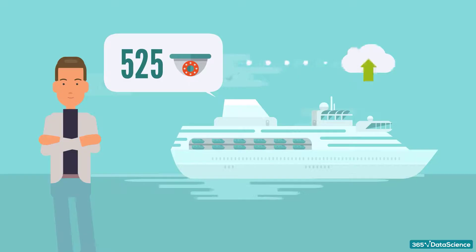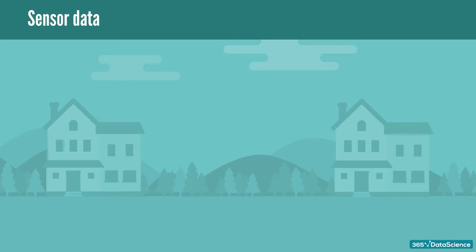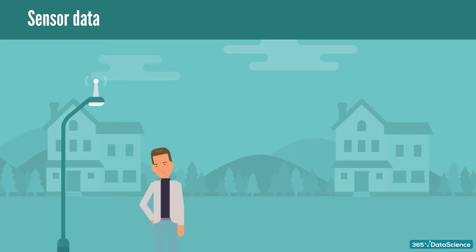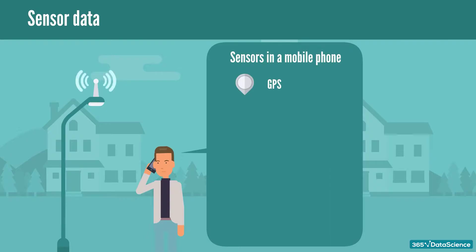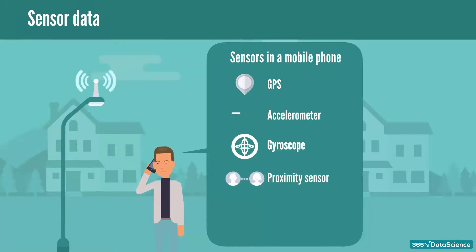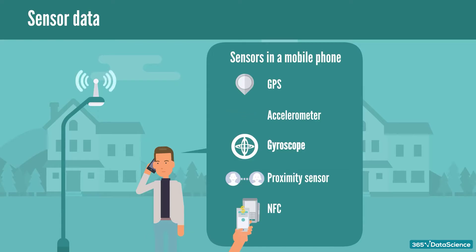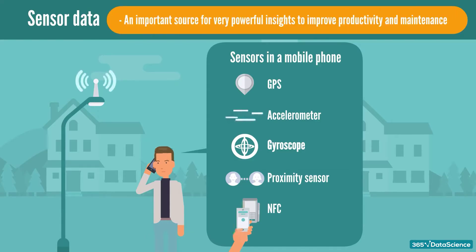I wanted to mention sensors. We have mentioned them a few times so far throughout the course. These are tiny devices that are attached to a product or device and transmit a particular type of data. Most modern devices contain several types of sensors. The smartphone you carry in your pocket probably has built-in GPS location information, accelerometer speed information, gyroscope orientation, a proximity sensor measuring distance from other people or locations, and an NFC or near field communication sensor allowing for contactless payments. Sensor data can be an important source for very powerful insights to improve productivity and maintenance.